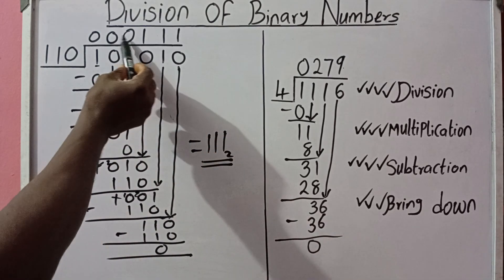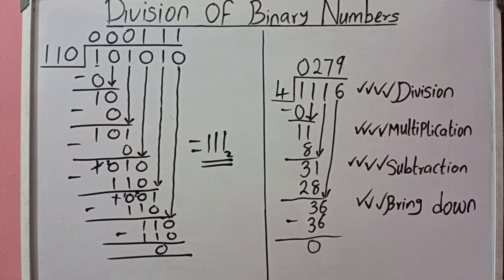So the answer to the question is 111 base two. The three trailing zeros are insignificant and you can choose not to write them. Thank you for listening.